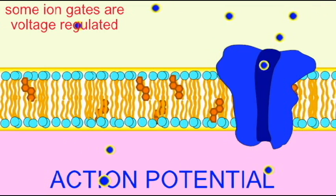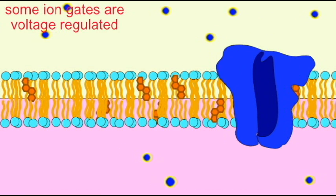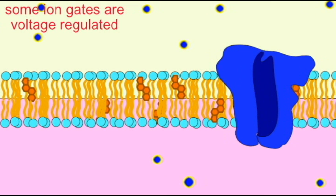So some gates are voltage regulated. It is the voltage across the cell membrane which determines whether they are open or closed.